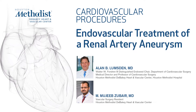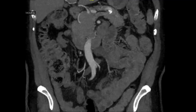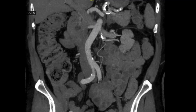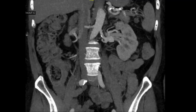This video demonstrates repair of a 3 cm mid renal artery aneurysm in a 70-year-old gentleman who presented with abdominal pain. CTA performed revealed a 3 cm aneurysm, bilobed in structure, arising from the mid renal artery.